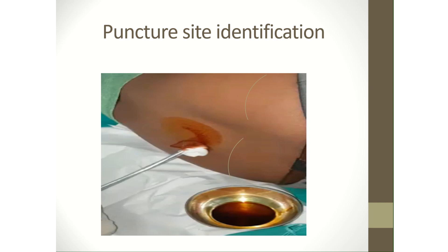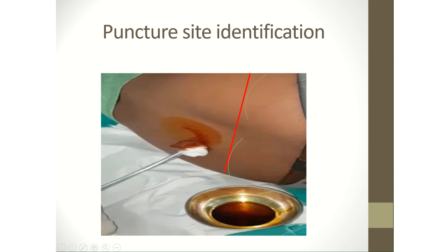As illustrated by this figure, the curves represent the iliac crest and an imaginary line is drawn at the highest point of the iliac crest passing through the L4 vertebra. A point above or below is chosen to perform the lumbar puncture.